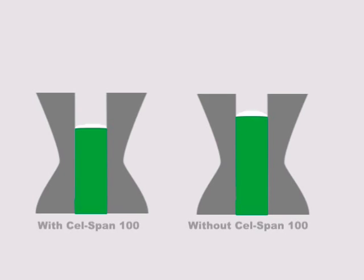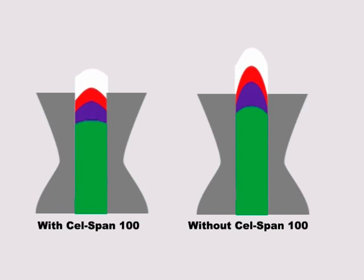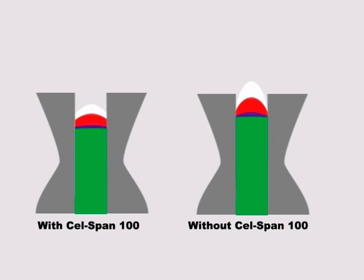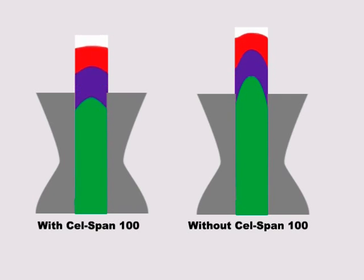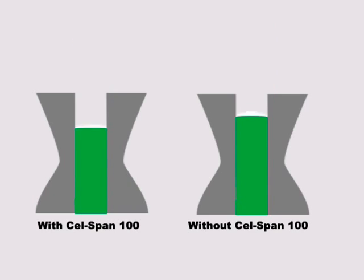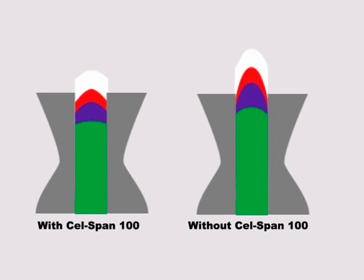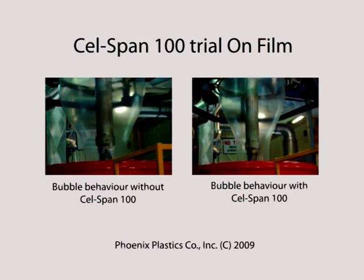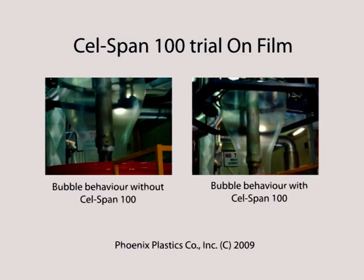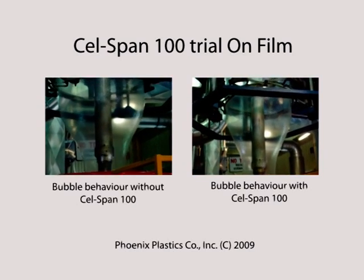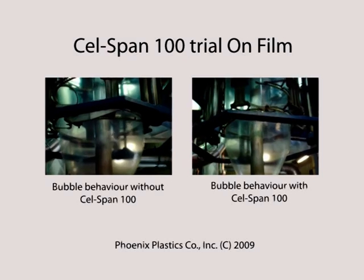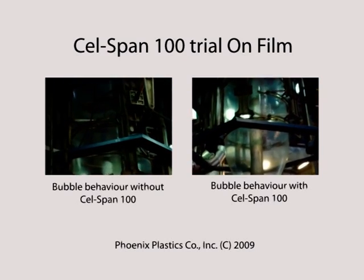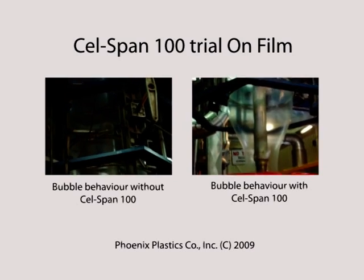The use of CellSpan 100 helps add stabilization to the polymer and reduces the viscoelasticity between the resin and the metal surface, increasing flow characteristics. Among the advantages of using Phoenix Plastics CellSpan 100 process enhancer is the control of bubble stability, giving the producer better control over film thickness.